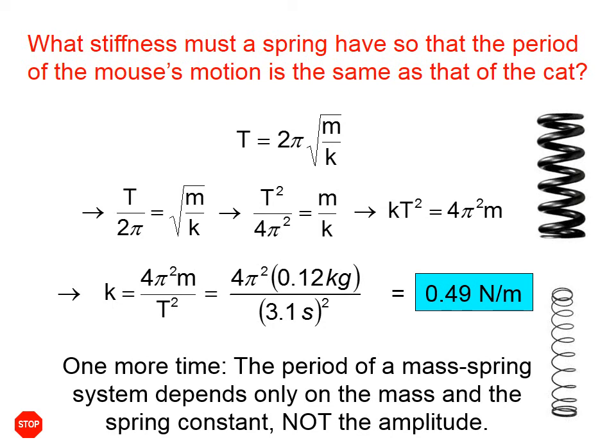One more time, the period of a mass spring system depends only on the mass and the spring constant, not on the amplitude. If it did depend on the amplitude, we would expect, in this equation at the top of the screen, to see a variable like capital A. But we don't see that.